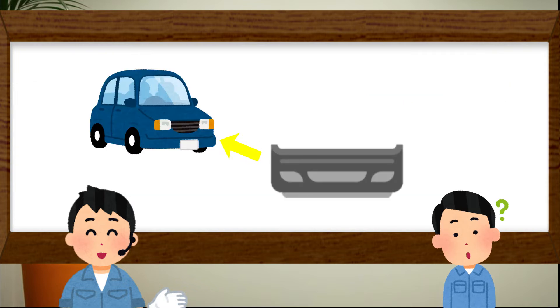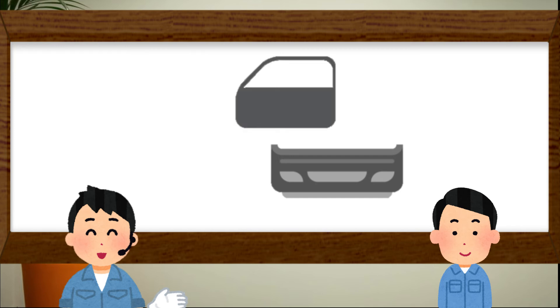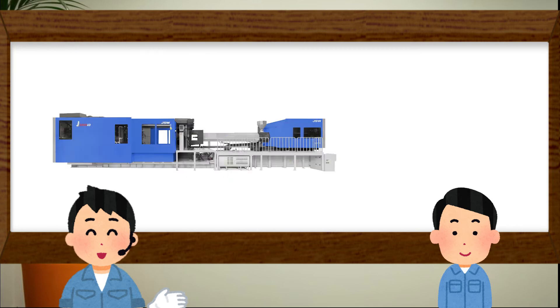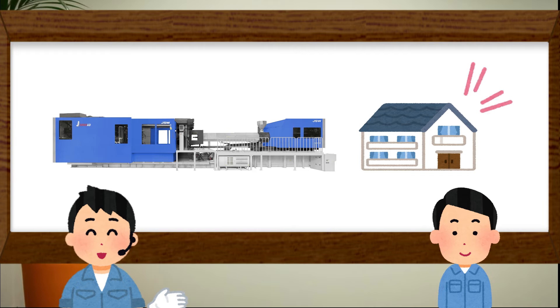Exactly. Car bumper, car door panel, plastic pallet, and so on. This machine is almost size of a house. Wow! So big!